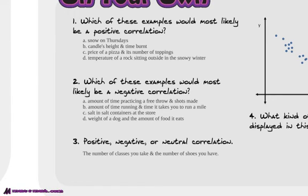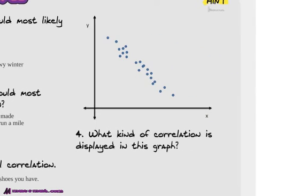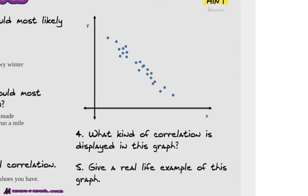Positive, negative, or neutral? The number of classes you take and the number of shoes you have. Positive, negative, neutral. Now, do this one. What kind of correlation is this displayed in this graph? Ready for your hints? Give a real-life example of this graph, if you would, before you see the hints. Think of an example of what you would see as something increases, y decreases. What might you see there?